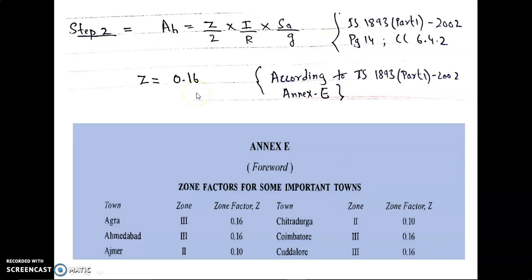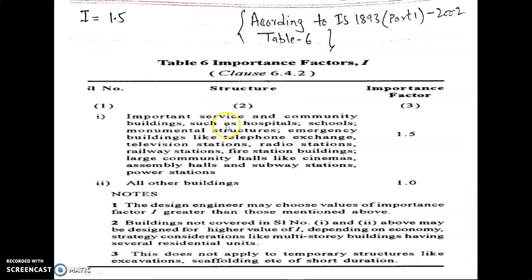Now we have to find I, the importance factor. It is clearly mentioned in the question that this is an institute building. For institute buildings or important community service buildings, we take I = 1.5, so here we take I = 1.5.